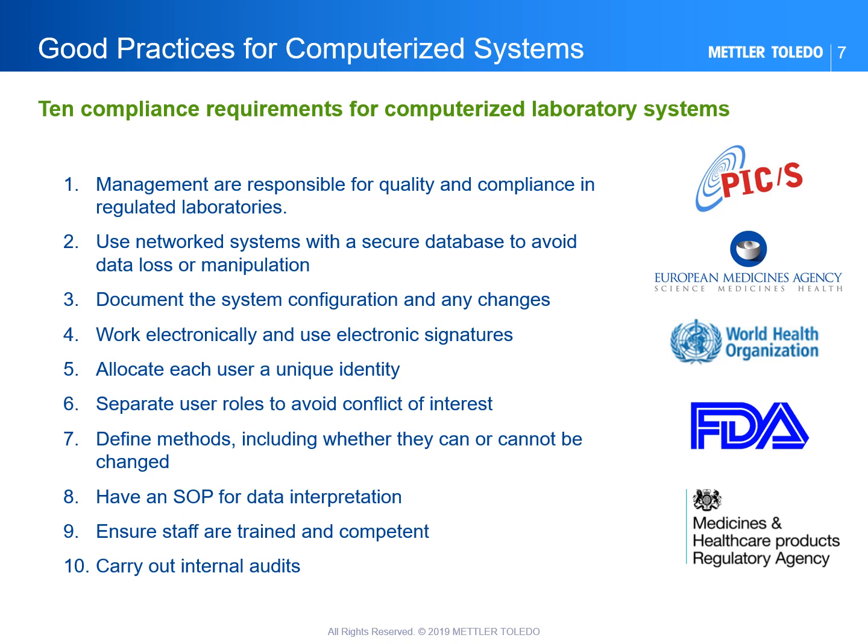This slide summarizes the main regulatory requirements for laboratory computerized systems: (1) management is responsible for quality and compliance; (2) use networked systems with a secure database to avoid data loss or manipulation; (3) document the system configuration and any changes; (4) work electronically and use electronic signatures; (5) allocate each user a unique identity; (6) separate user roles to avoid conflict of interest; (7) define methods, including whether they can be changed; (8) have an SOP for data interpretation; (9) ensure staff are trained and competent; and (10) carry out internal audits.